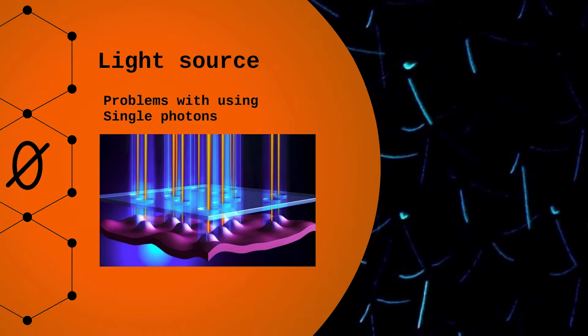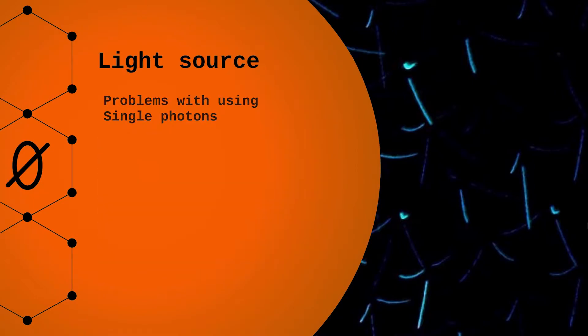In practice, many implementations use laser pulses attenuated to a very low level to send the quantum states. These laser pulses contain a very small number of photons, for example, 0.2 photons per pulse.